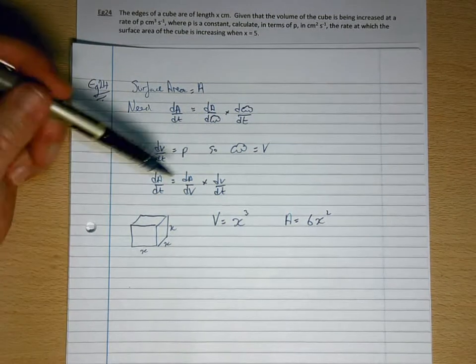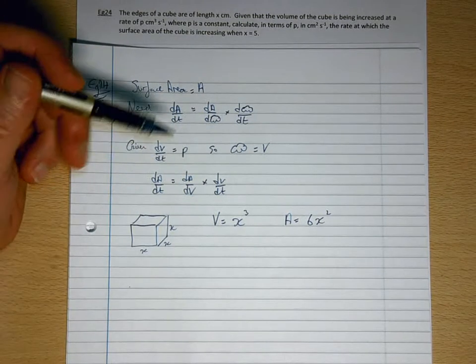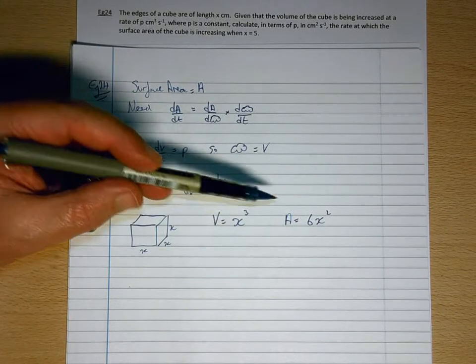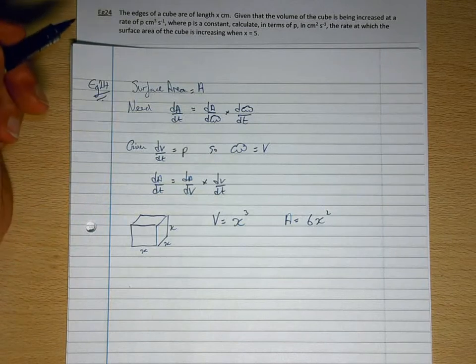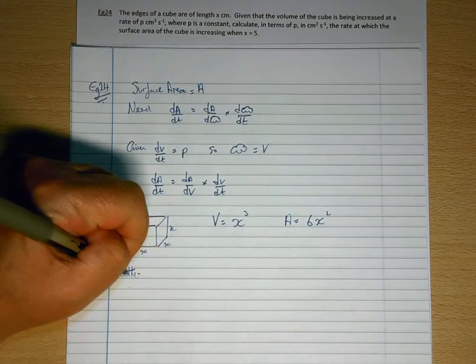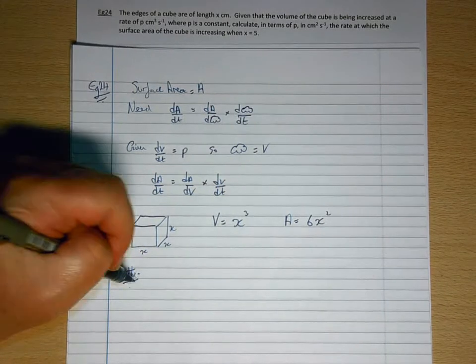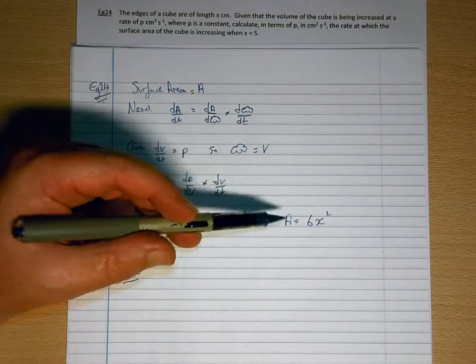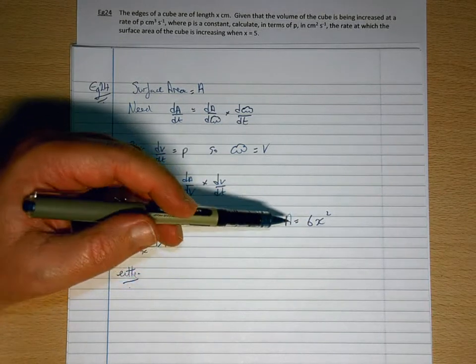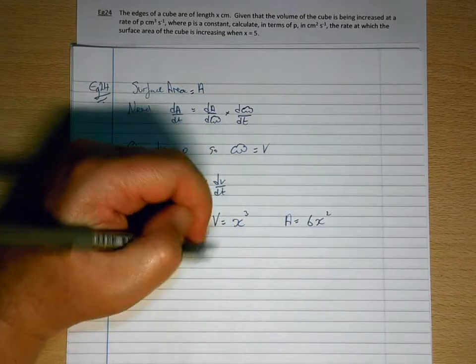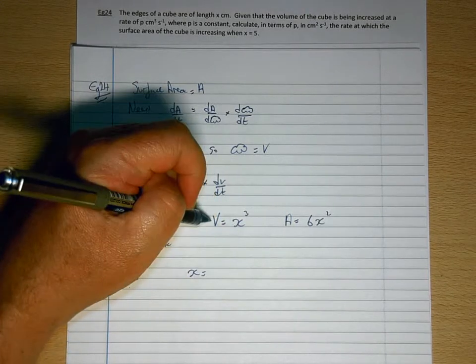So what I need to do here is either eliminate x from the expression. So we'll do that first as the first possible way of dealing with this. So I want dA/dV, so I want to eliminate the x and get it in terms of V.